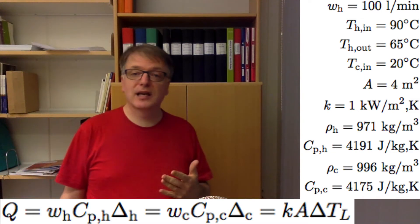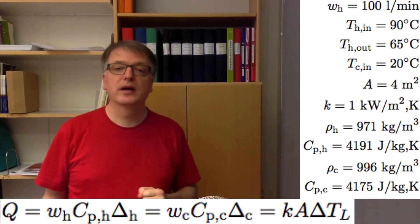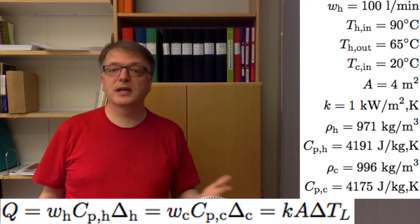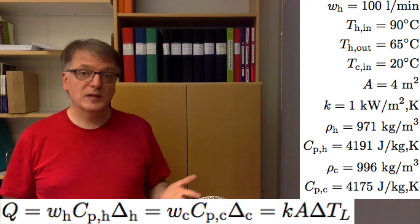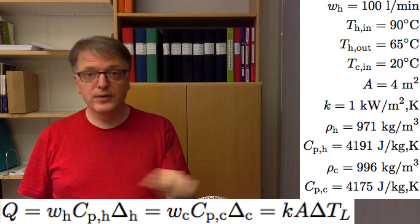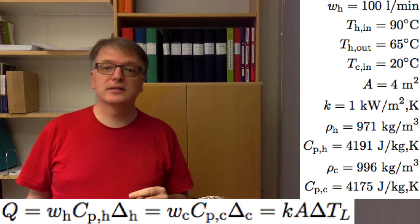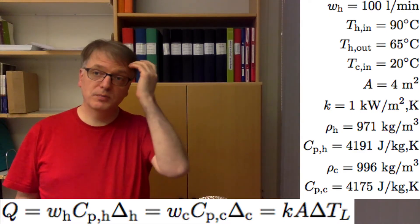And that must also be the same as the heat flux that goes through the surface, so k times A times the logarithmic mean temperature. Note it's the logarithmic mean temperature because we have no phase changes, so we have a nice steady increase and decrease respectively of the temperature of the two mediums.